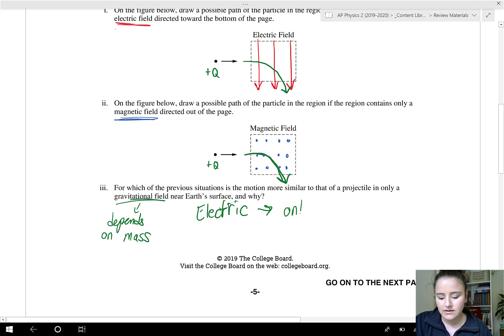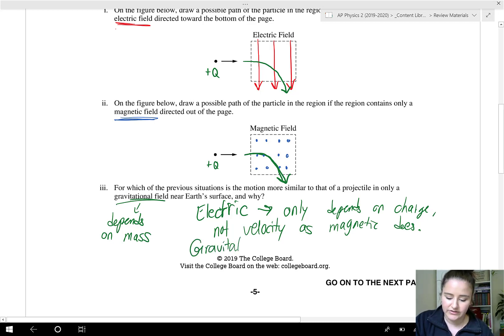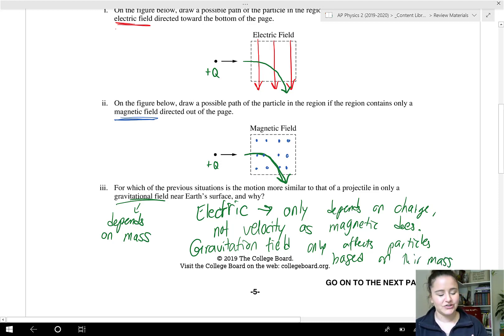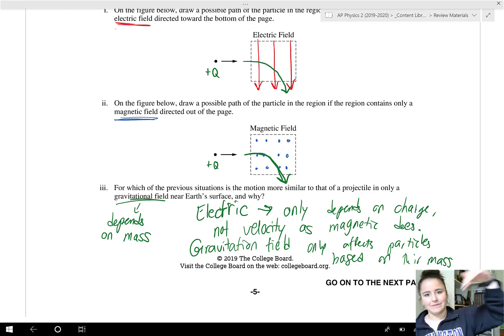The electric, because it only depends on charge, not velocity, as the magnetic does, just like the gravity force or the gravitational field only affects particles based on their mass. So the path in the electric field will be most similar to a projectile in a gravitational field and will follow that same curved parabolic path.